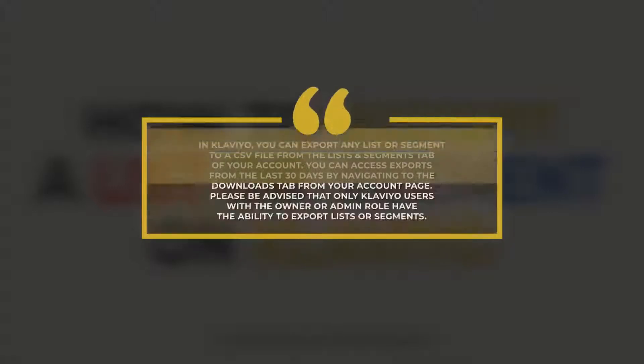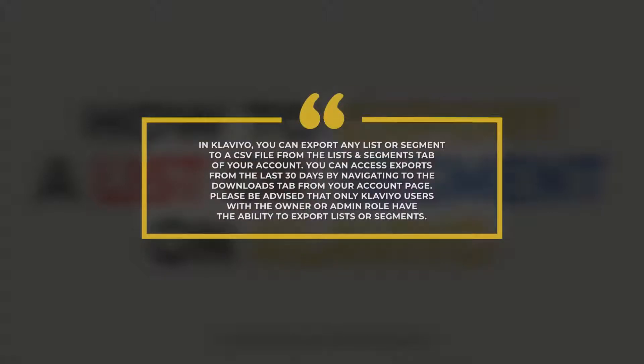In Klaviyo, you can export any list or segment to a CSV file from the Lists and Segments tab of your account. You can access exports from the last 30 days by navigating to the Downloads tab from your account's page. Please be advised that only Klaviyo users with the owner or admin role have the ability to export lists or segments.